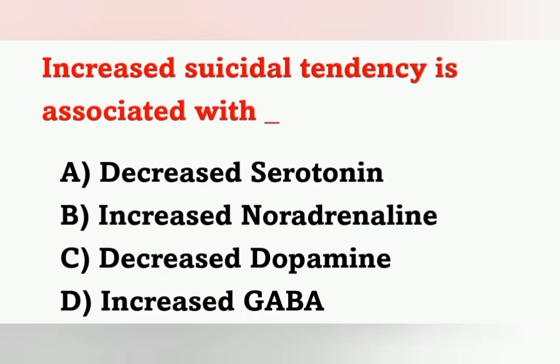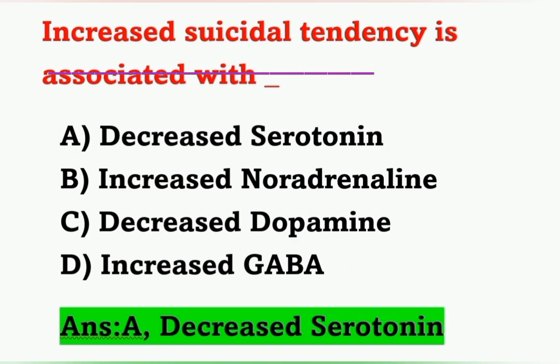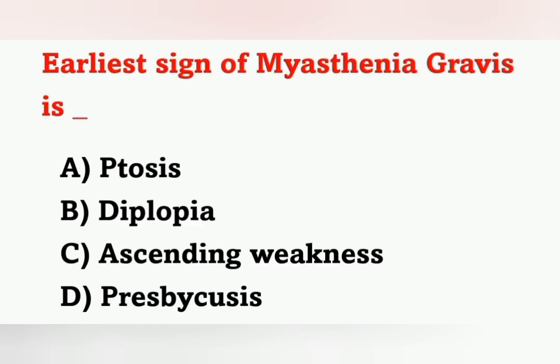Next question: Increased suicidal tendency is associated with which of the following? Options: A) Decreased serotonin, B) Increased noradrenaline, C) Decreased dopamine, D) Increased GABA. Increased suicidal tendency is a characteristic feature of depression. In depression, there is a deficient serotonin level. The correct answer is decreased serotonin, option A.